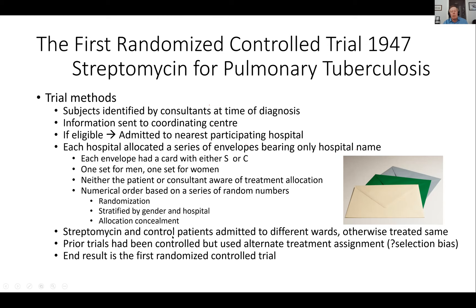Streptomycin and control patients were admitted to different wards but otherwise treated exactly the same. Prior trials had been controlled but used an alternate treatment assignment, where if one patient got streptomycin the next got control and so forth — not a true randomization. Bradford Hill was concerned about selection biases, which is why he suggested the randomization procedure, resulting in the first randomized control trial.